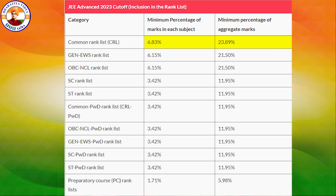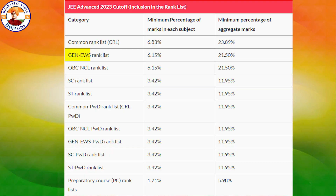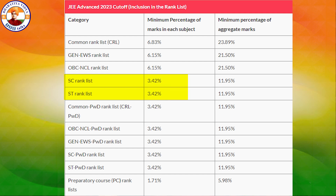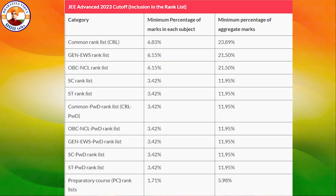In JEE Advanced, there is 6.83% subject cutoff. The first percentage of aggregate marks is 23.89%. In General/EWS it is 6.15% subject and 21.5% aggregate total. In OBC-NCL it is 6.15% subject and 21.5% aggregate — the same as EWS. SC is 3.42% subject and 11.95% aggregate. ST is also 3.42% and 11.95%. PwD is also the same.